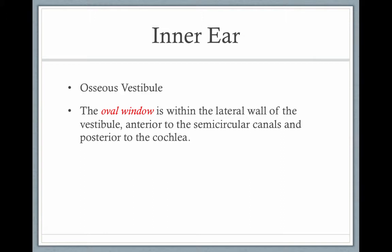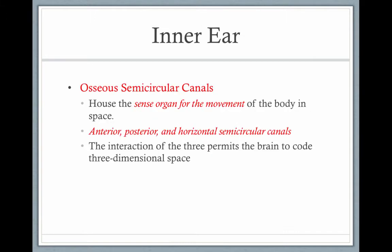The oval window is within the lateral wall of the vestibule, anterior to the semicircular canals and posterior to the cochlea. That connects the middle ear to the inner ear. The osseous semicircular canals house the sense organs for movement of the body. There are three semicircular canals, and the interaction of these three canals and the fluid within them helps the brain code three-dimensional space.